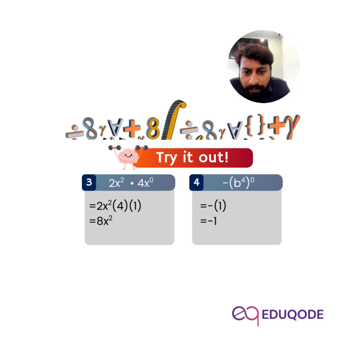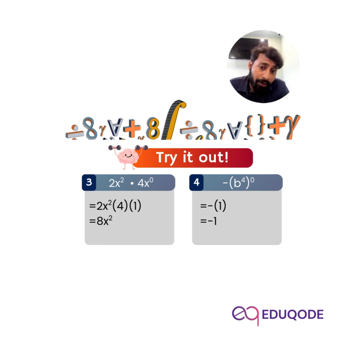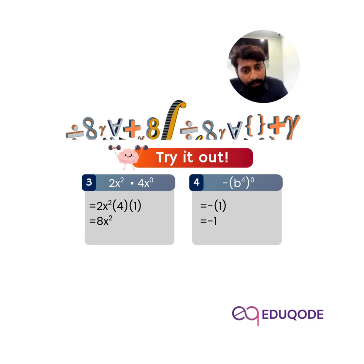Next example: two x squared multiplied by four x power zero. Since x power zero is always equal to one, we have two x squared multiplied by four multiplied by one. The coefficients two multiplied by four give eight, and x squared multiplied by one is x squared. The answer is eight x squared.